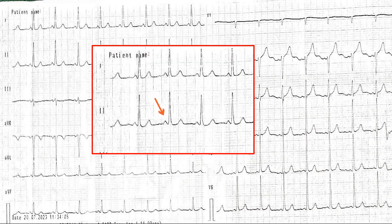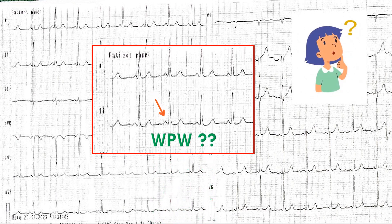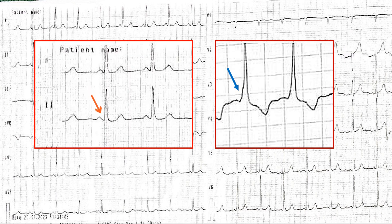The main question arises: the PR interval is short, so is there a possibility of WPW syndrome — the commonly known accessory pathway which causes palpitations? We need to evaluate for that. So, is there an accessory pathway present or not? There are criteria being met for WPW except for a delta wave. The blue arrow is showing a patient who has a typical WPW or accessory pathway, where the PR is short.